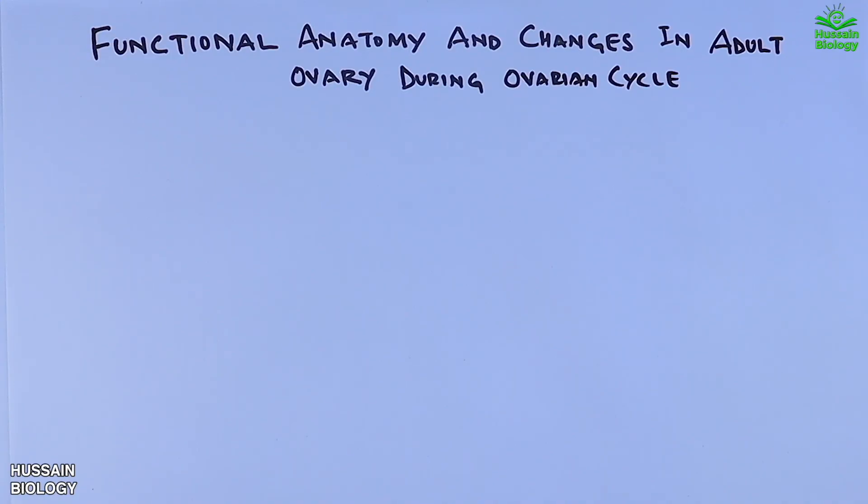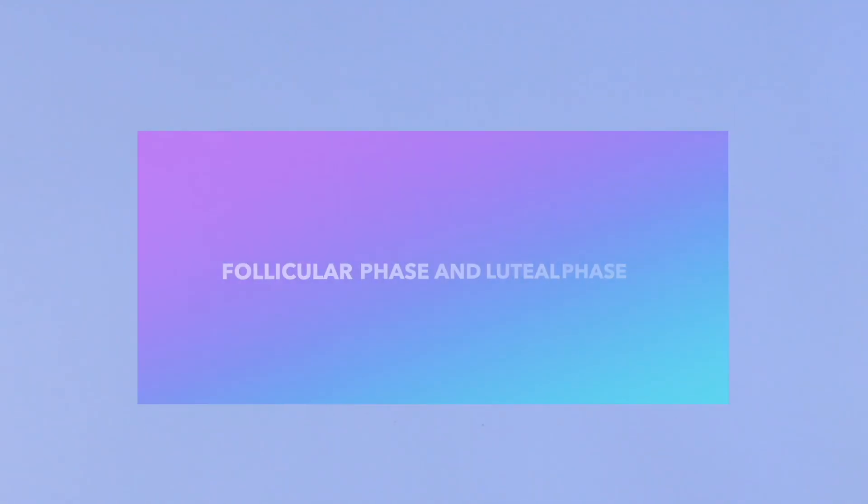The adult ovary undergoes several changes during the ovarian cycle, which is a regular process of maturation and release of an egg in females. These changes are primarily driven by hormonal fluctuations and occur in two main phases: the follicular phase and luteal phase.